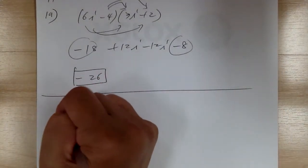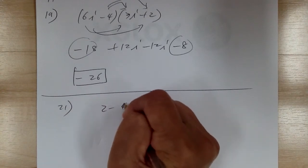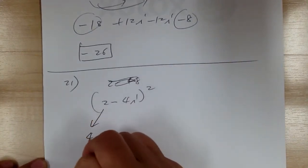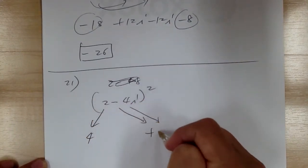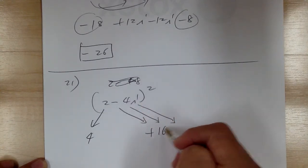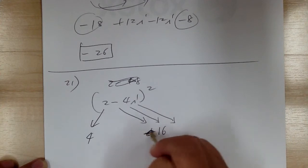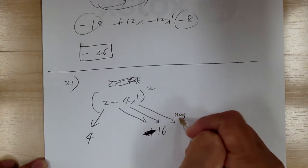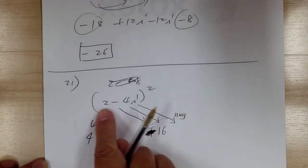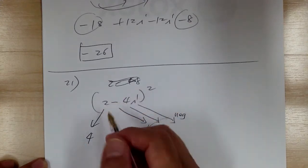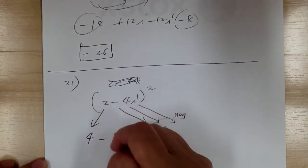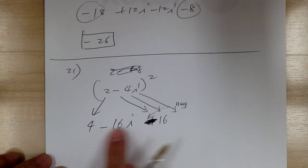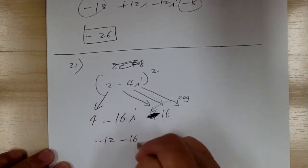Number 21: (2 minus 4i) squared. Square each term: 2 squared is 4; square the sign, you get plus; 4 squared is 16; i squared is negative 1, so this becomes negative 16. For the middle term, multiply together: the sign is minus, 2 times 2 is 4 times 4 is 16, so the middle term is minus 16i. Combine like terms: 4 minus 16 gives negative 12 minus 16i.